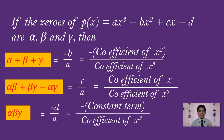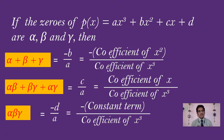So these three formulas are: alpha plus beta plus gamma = -B/A; alpha·beta + beta·gamma + alpha·gamma = C/A; and the product alpha·beta·gamma = -D/A.